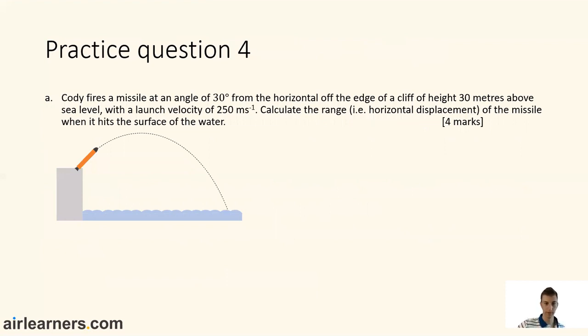Okay, practice question four. Cody fires a missile at an angle of 30 degrees from the horizontal off the edge of a cliff at a height 30 metres above sea level with a launch velocity of 250 metres per second. Calculate the range, the same thing as the horizontal displacement, of the missile when it hits the surface of the water. Four marks, four minutes, may take three to five minutes I suspect. So pause the video, do it properly, take your time about it because it is a bit of a complex question, and get back to the video when you're done.